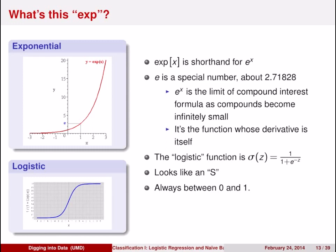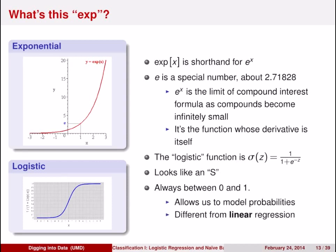In case it's been a while since you've seen the exponential function, it is the inverse of the logarithmic function. A logarithm makes big things small; an exponential function makes small things big. You may remember it as part of the formula for computing continuously compounding interest. The logistic function is just 1 over 1 plus the exponential function. If you plot this function, it looks like an S. The nice thing is that the output is always between 0 and 1, which allows us to model probabilities. The output of a linear regression can be any real number, but the output of logistic regression must be between 0 and 1 because it's a probability — this is the main distinction between logistic and linear regression.